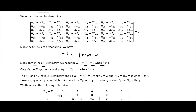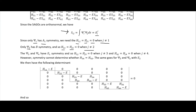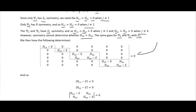Since only ψ₁ has A1 symmetry, H₁ⱼ = Hⱼ₁ = 0 when j ≠ 1. For ψ₃ and ψ₄ which have E1 symmetry, H₃ⱼ = 0 when j ≠ 3, and the same for H₄ⱼ when j ≠ 4. However, symmetry cannot determine H₃₄ and H₄₃. The same applies for ψ₅ and ψ₆ in the E2 representation. This allows us to simplify the determinant into one-by-one and two-by-two block determinants.